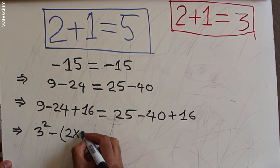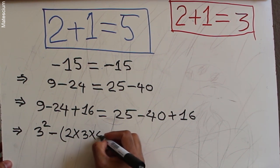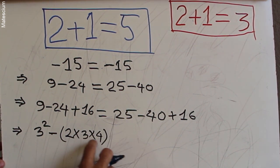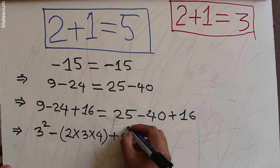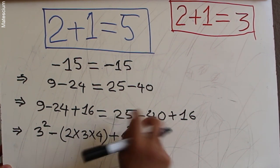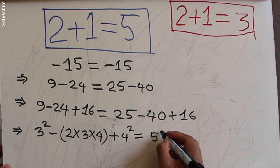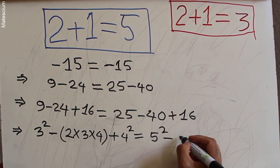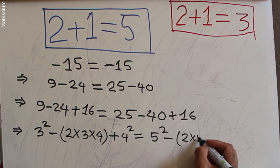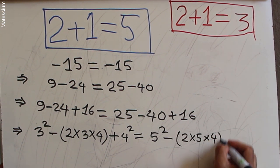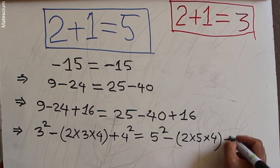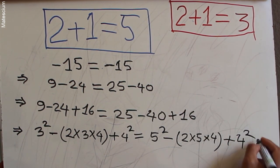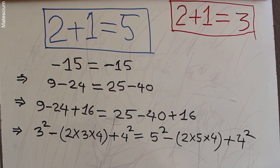Now I'll expand each term: 9 is 3 squared, minus 24 can be rewritten as 2 times 3 times 4 (since 2×3=6 and 6×4=24), and 16 is 4 squared. On the right-hand side, 25 is 5 squared, minus 40 is 2 times 5 times 4 (since 2×5=10 and 10×4=40), and 16 is 4 squared.